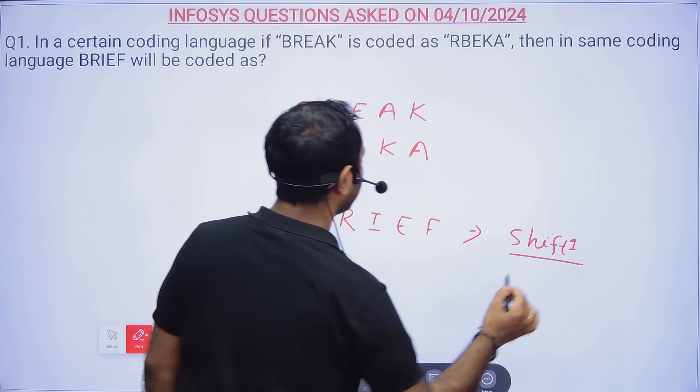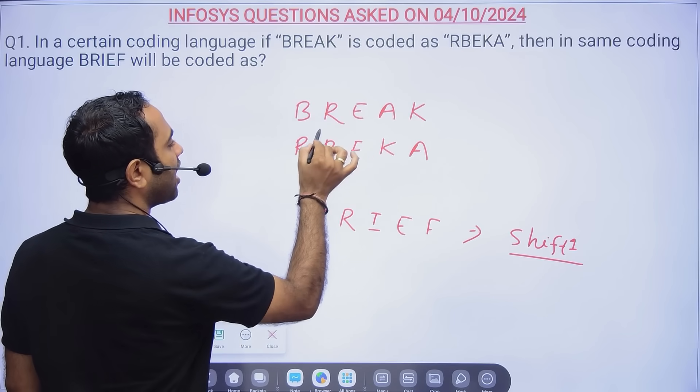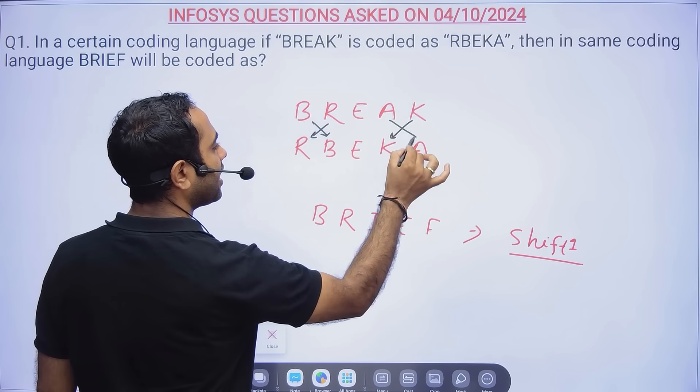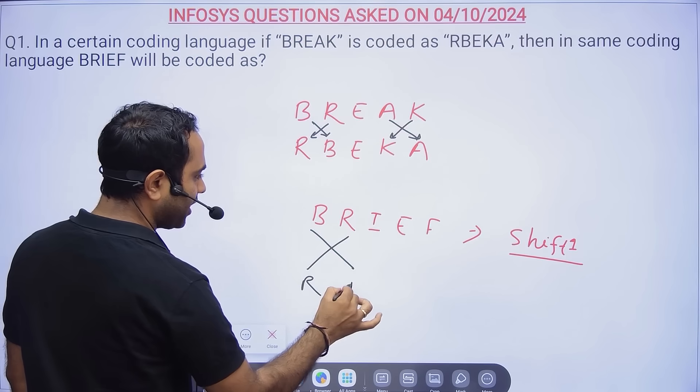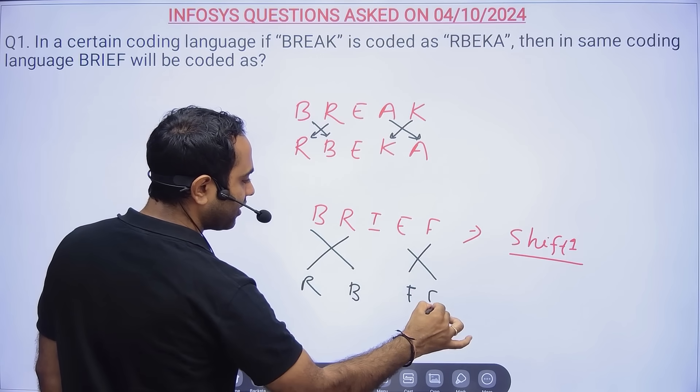Let's understand the logic here. R and B are interchanged, K and A are interchanged. So R and B will be again interchanged, E and F will be again interchanged.